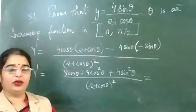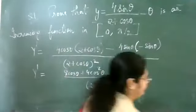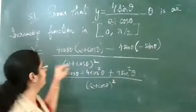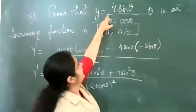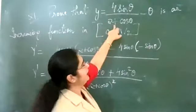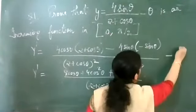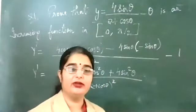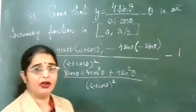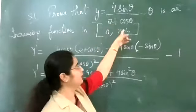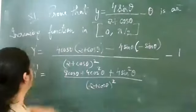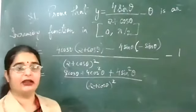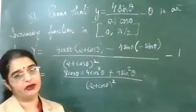First step every time: find y-dash. Since this is not in terms of x but in terms of θ, we differentiate with respect to θ — that is dy/dθ, not dy/dx. Don't write dy/dx; that will be wrong. The function is in θ, so we differentiate with respect to θ. Also, the term −θ differentiates to −1, which carries through.